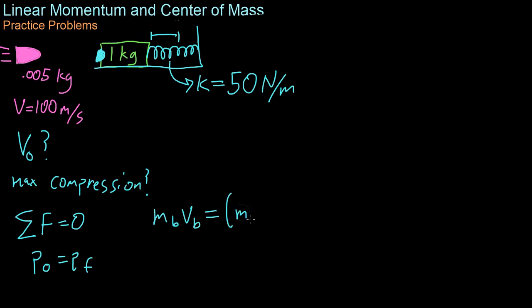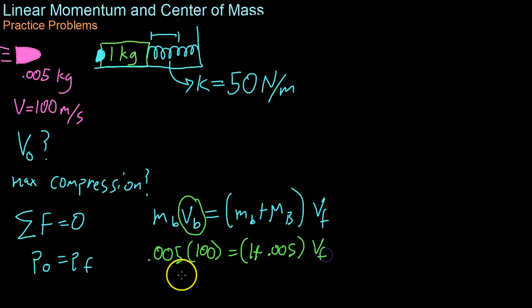But what we have moving immediately after the collision is both the block and bullet moving at some velocity to the right. So our mass for the second part of the momentum is the mass of the bullet plus the mass of the block, which I'll represent with a capital B, times some v final. Now we have all the known masses as well as the initial velocity of the bullet. So from here it's just a matter of plugging in our known numbers. And here we have 1 plus 0.005 times v final, and we get a v final value of 0.5 meters per second.